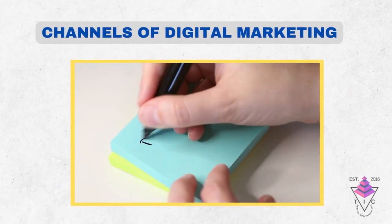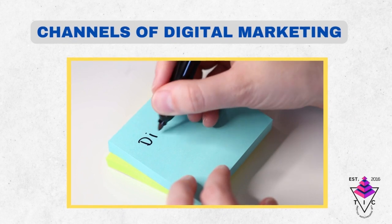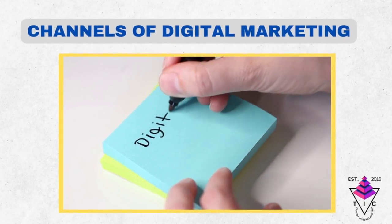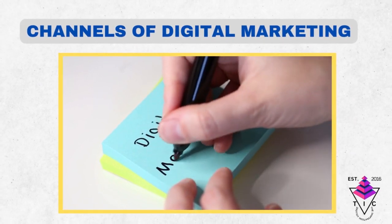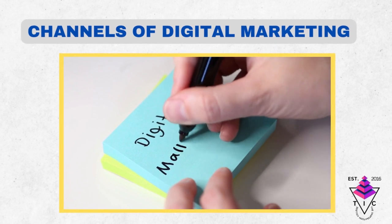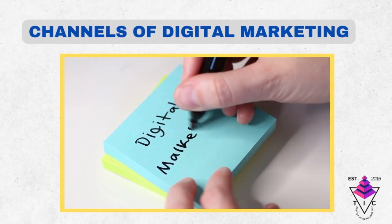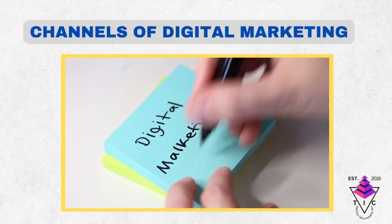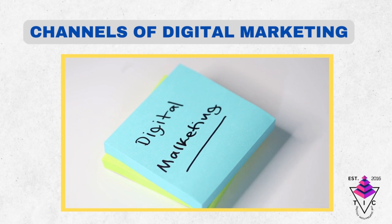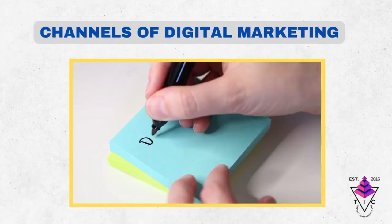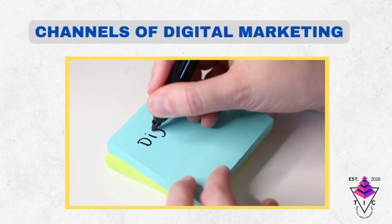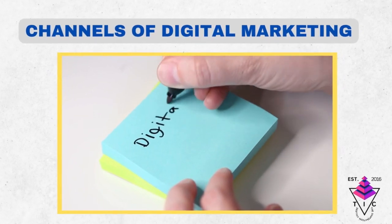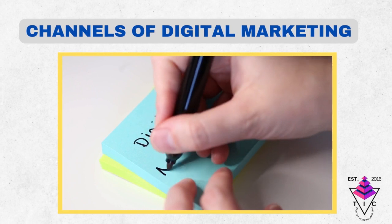Let us now look at various channels of digital marketing. For the purpose of this video we will just focus on three of them: search engine optimization (SEO), social media marketing (SMM), and email marketing — and of course there are many more.